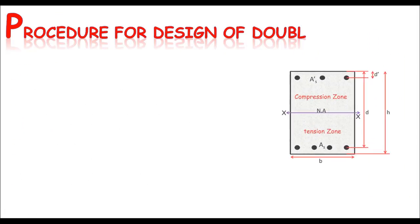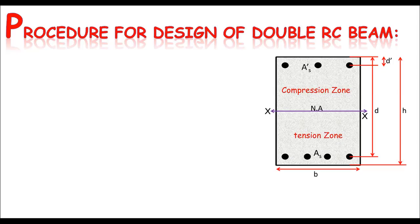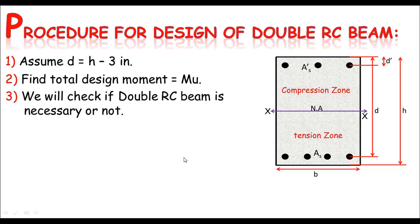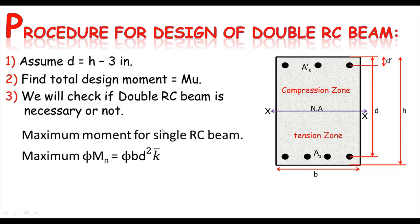Now let's start the step-by-step process for the design of a double RC beam. Step 1 is the assumption of effective depth, which we assume as total height H minus 3 inches — though you can also use H minus 4 inches or H minus 2 inches; we can review this after completing the design. Step 2 is to find the total design moment from the self-weight and external loads. Step 3 is to check if a double RC beam is needed. The maximum moment for a single RC beam is phi × b × d² × k-bar.